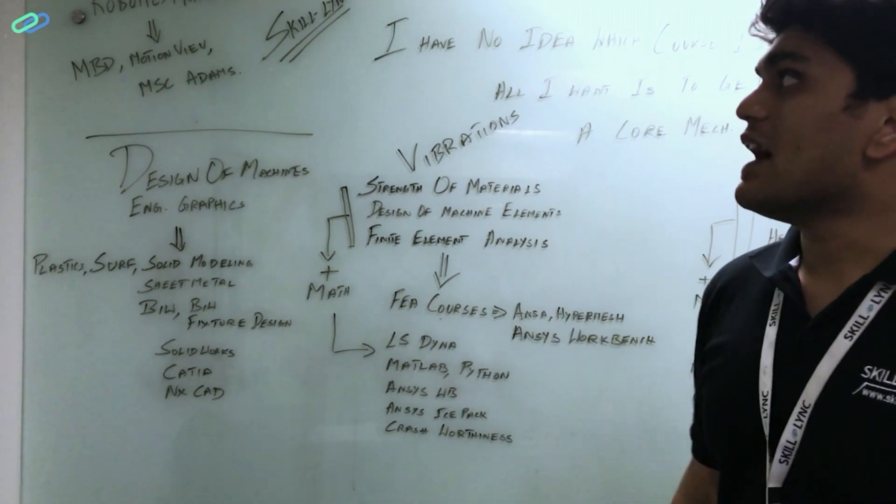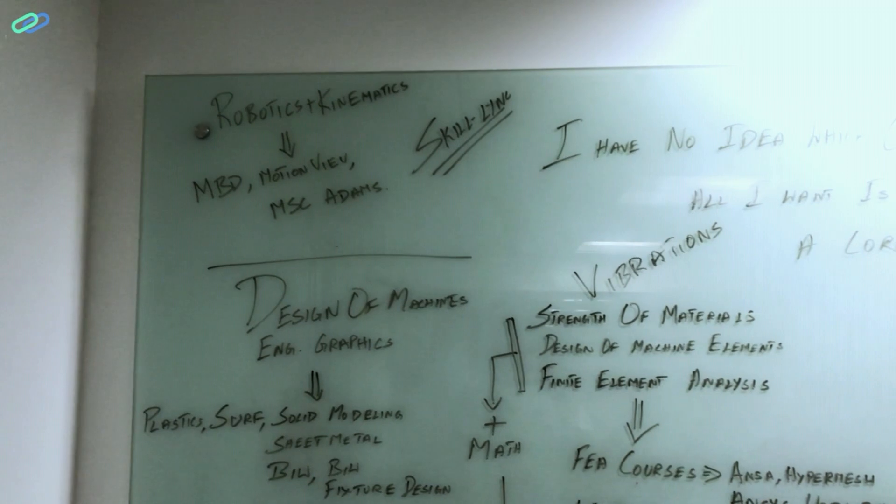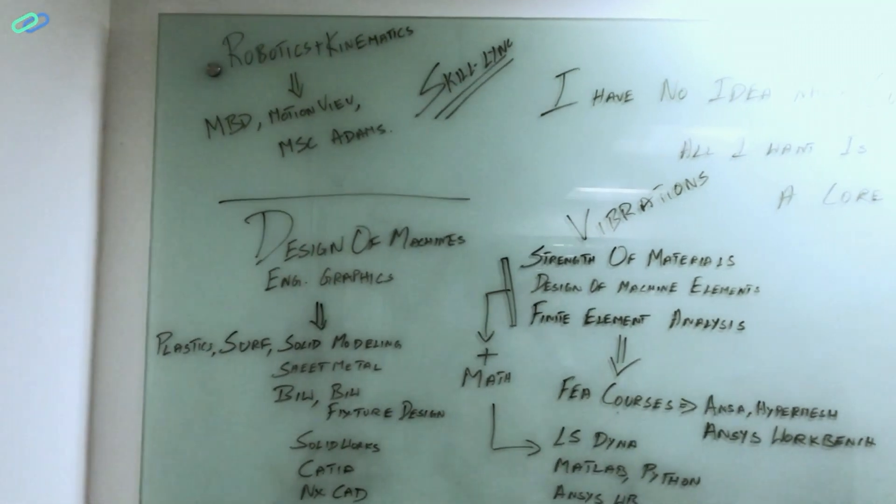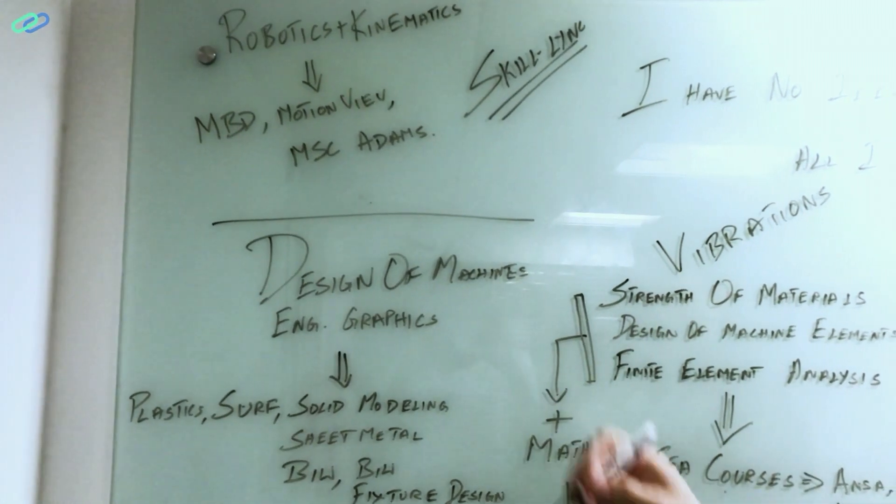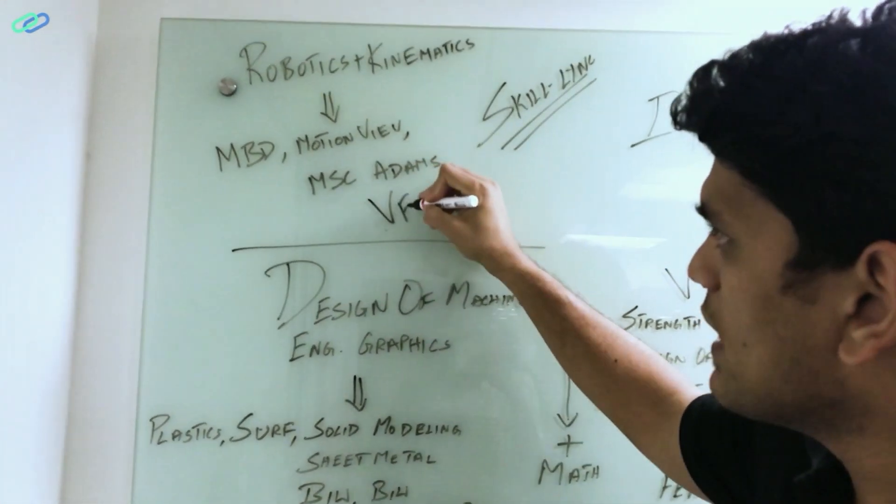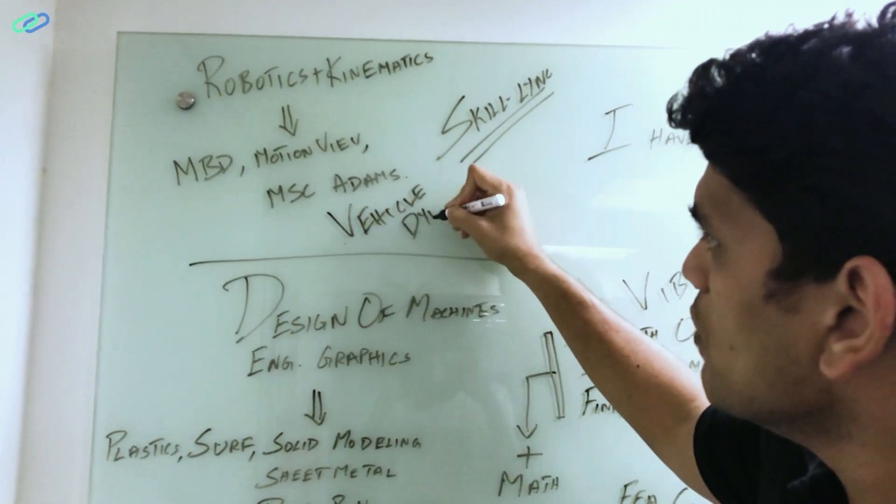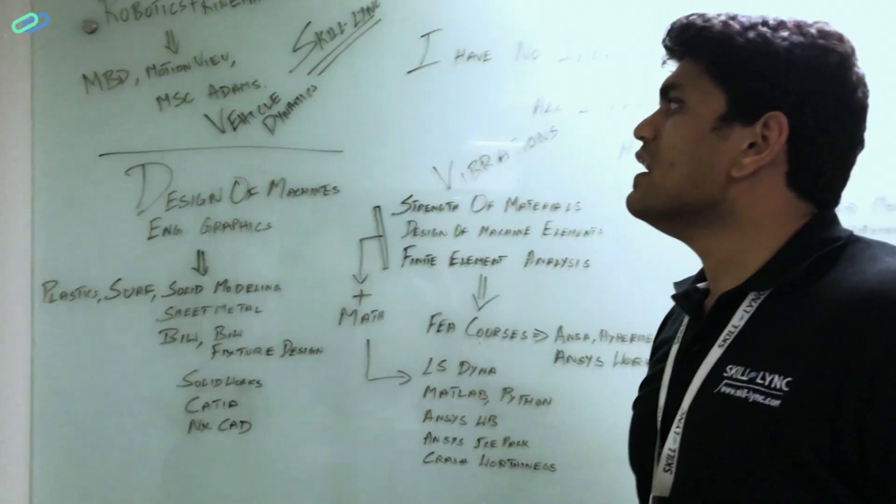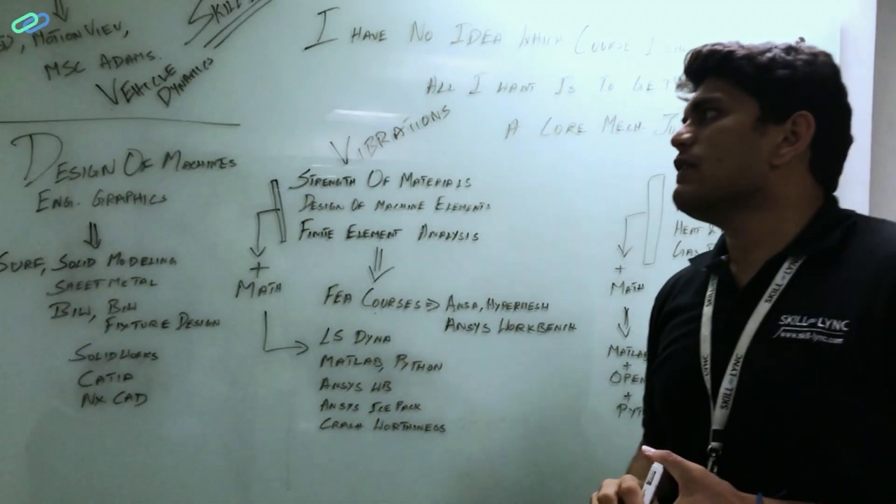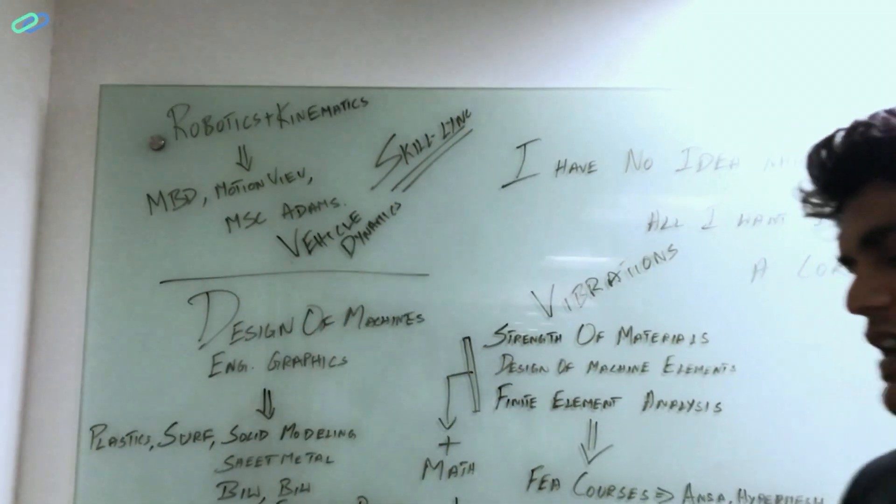I like robotics and kinematics. I like vehicle dynamics. Then the course that you need to do is multi-body dynamics using MotionView and MotionSolve or MSC ADAMS vehicle dynamics. So this is where you basically look into steering kinematics, suspension design and everything. So multi-body dynamics or vehicle dynamics is something that you need to take and look into in robotics and kinematics.